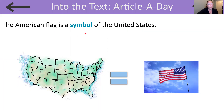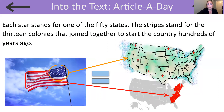The American flag is a symbol of the United States. Here we have a photograph of the American flag, and that also stands for, or represents, the United States. This is a new symbol that we're learning about. Each star stands for one of the 50 states. The stripes stand for the 13 colonies that joined together to start the country hundreds of years ago. Here in this part of the flag are the stars, and each star stands for one of the 50 states. And here is a map of America, and each of these is a state.